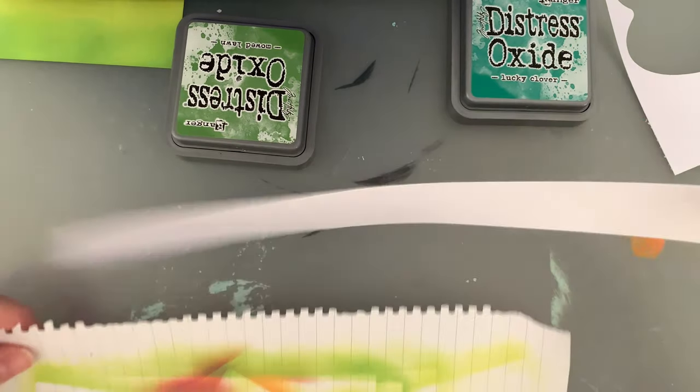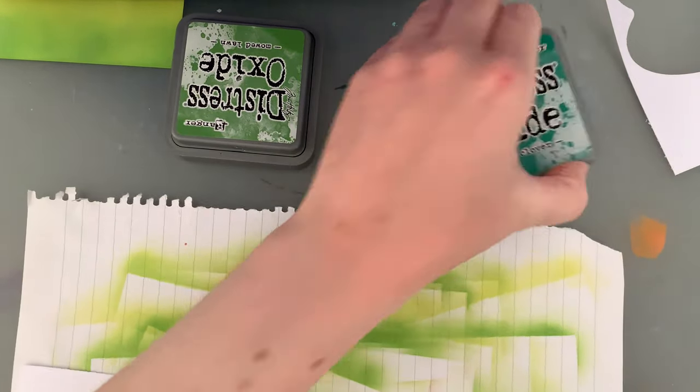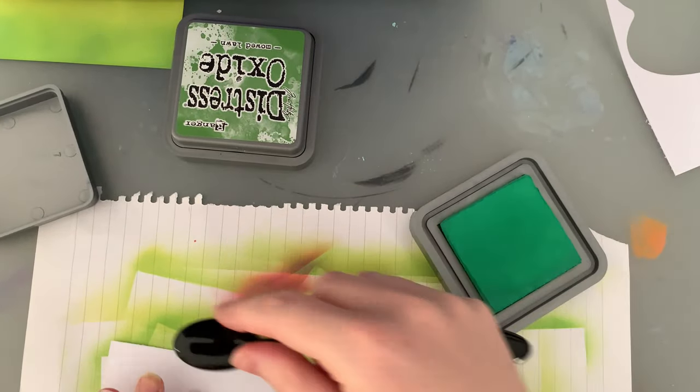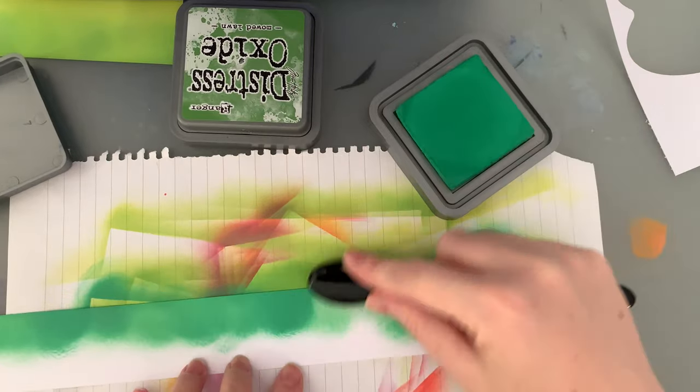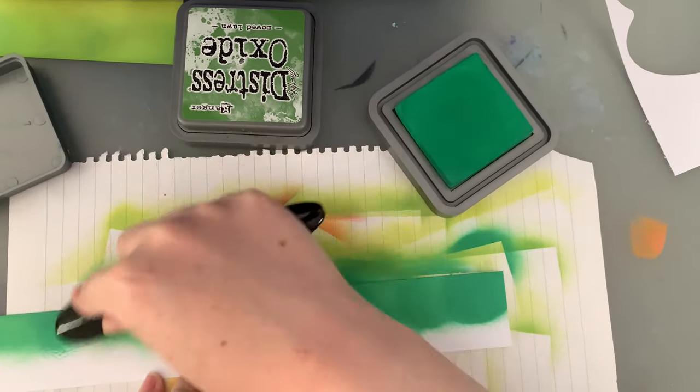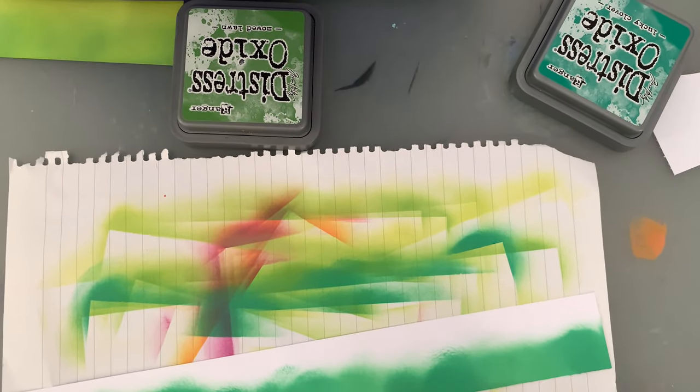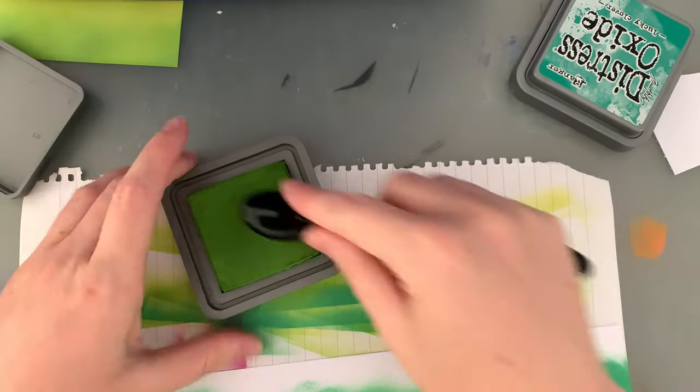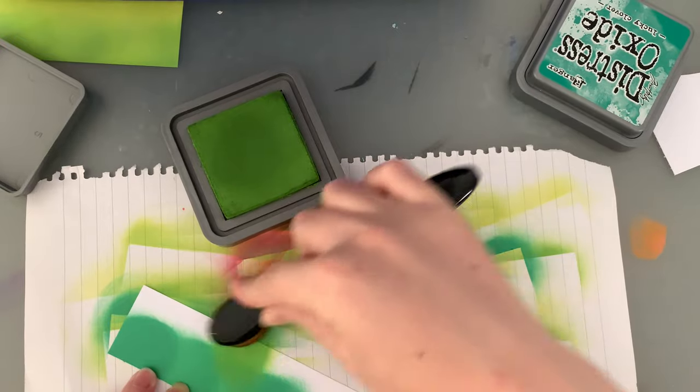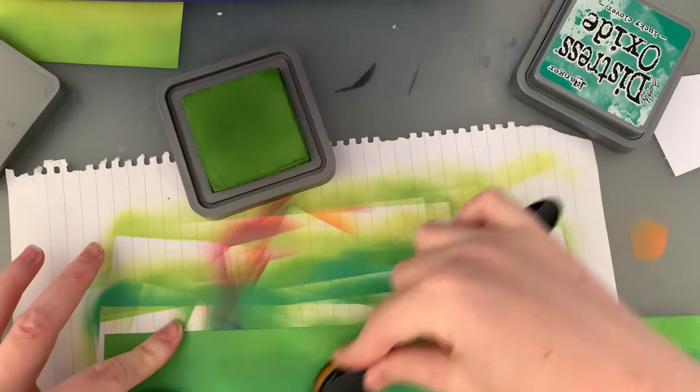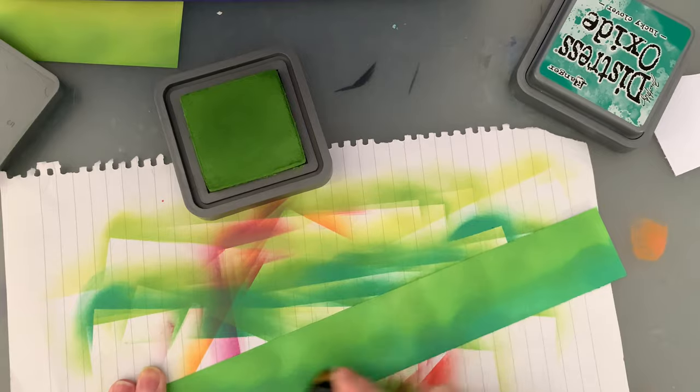Then for my other piece, it's going to be behind that first piece, so I wanted it a little bit darker to make it look like it had a little bit of depth. So for that I'm using the Lucky Clover and then using that Mowed Lawn again. If you're wondering why I started straight onto ink blending and not onto stamping with this one, it's because I ordered this stamp set specifically for this project.